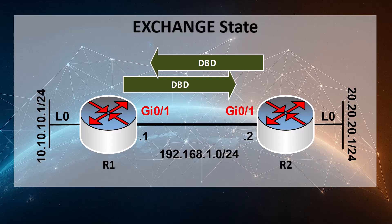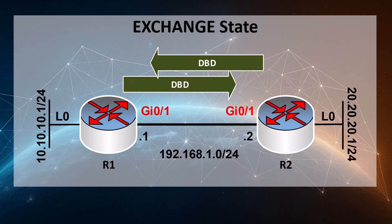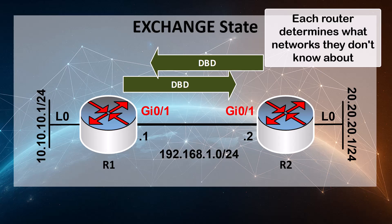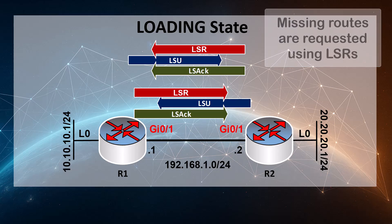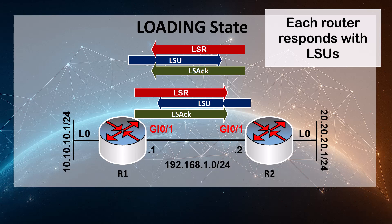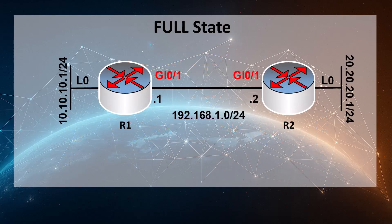R2 begins sending DBD messages, which means we have entered the exchange state. This is where the routers exchange their DBDs, which essentially contain a summary of the LSDB of each router. With the exchange of these DBDs, each router finds out about the networks they don't yet know about, leading to the loading state. Here, each router, knowing what routes it is missing, requests the routes using LSRs. Each router responds with LSUs, and once the intended information is successfully received, they are acknowledged using LSAcks.